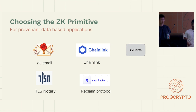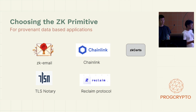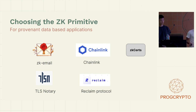Writing circuits for data provenance apps is hard and time-consuming, but you need not do that, thanks to PSE and other teams out there who have built primitives that you can use — namely ZK email, TLS notary, Chainlink, and Reclaim Protocol. Each of them have their own security and trust assumptions, and if none of them satisfy your needs, you can always build your own primitive. For example, ZK certs, which is another work-in-progress project by us.